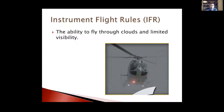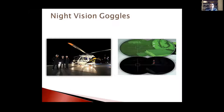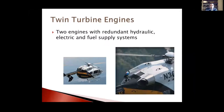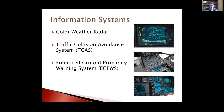Ways to mitigate transport risk include instrument flight rules capabilities (flying through clouds and limited visibility), night vision goggles, GPS approaches, twin engines, traffic collision avoidance systems, and enhanced ground proximity warning systems. The proximity warning system alerts the pilot — 'aircraft, aircraft, aircraft' — half a mile out, indicating another aircraft on a potential collision course.